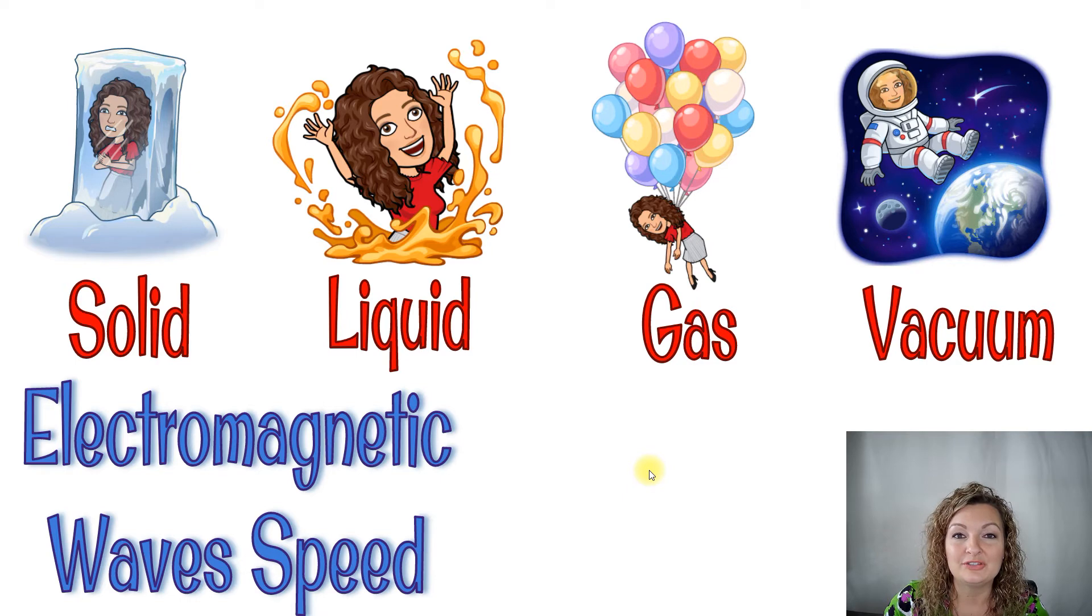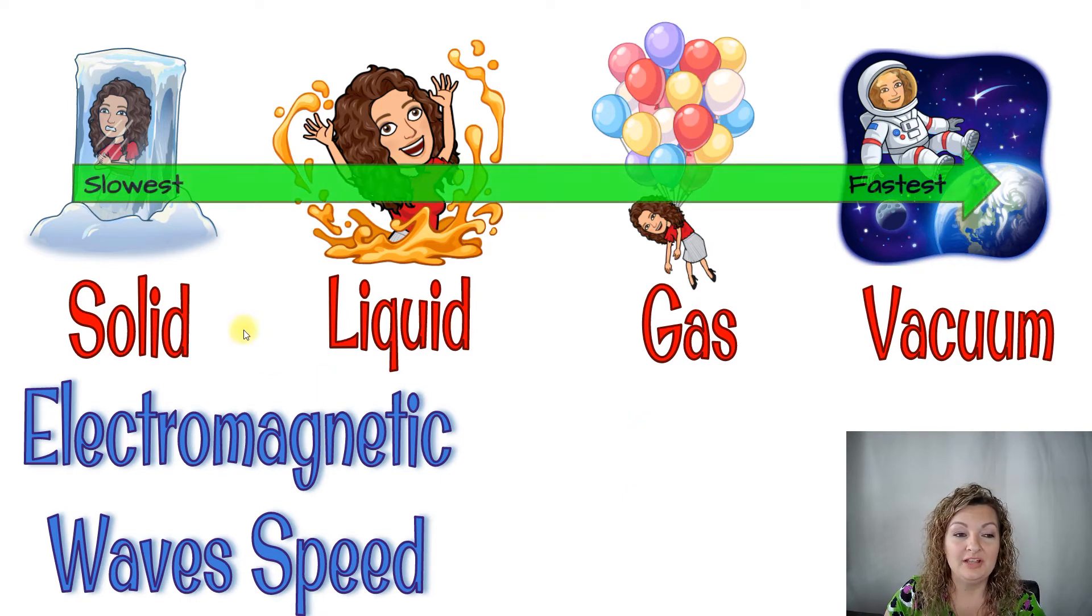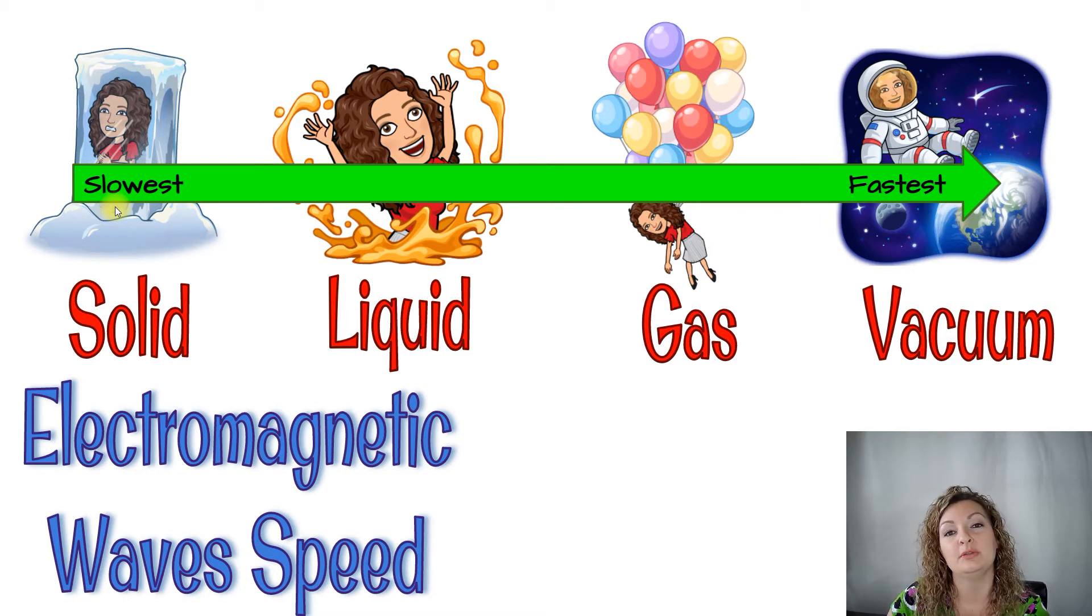So it's going to be the very slowest in a solid where we have the particles the closest together. It's going to take longer to maneuver through those particles since they're so densely packed. Now as we go up, liquid is going to be the next slowest, gas, and the very fastest is going to be in a vacuum, where there's no particles because there's nothing to slow it down.